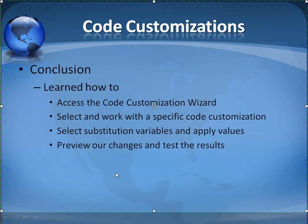In conclusion, we've learned how to access the code customization wizard, select and work with a specific code customization, select substitution variables and apply values, make some changes in code, and preview our changes and test those results.